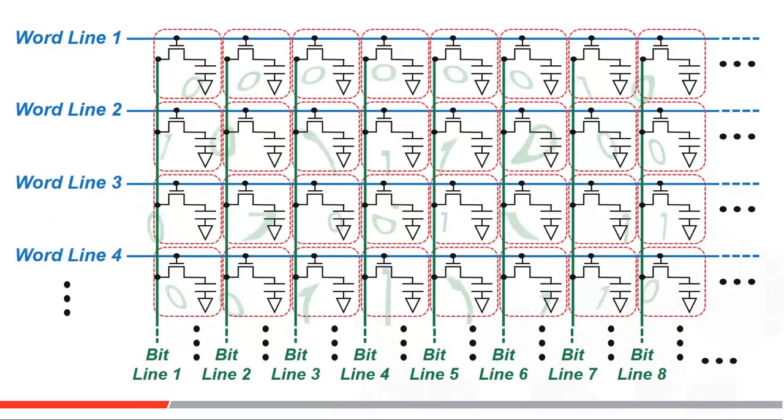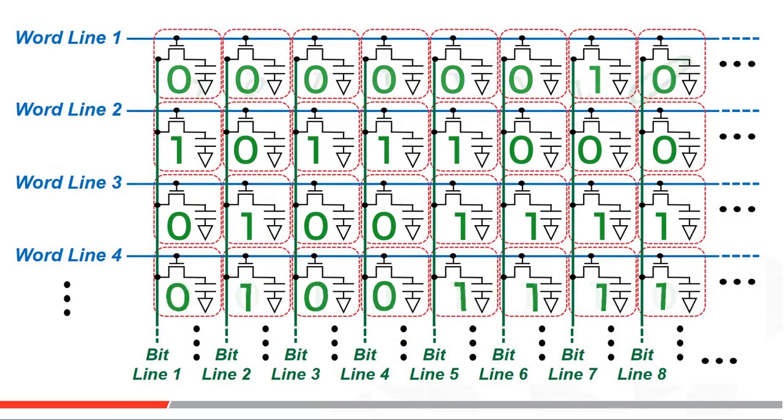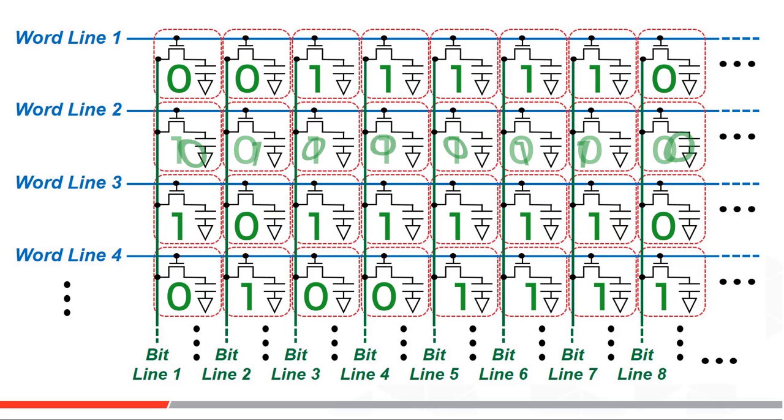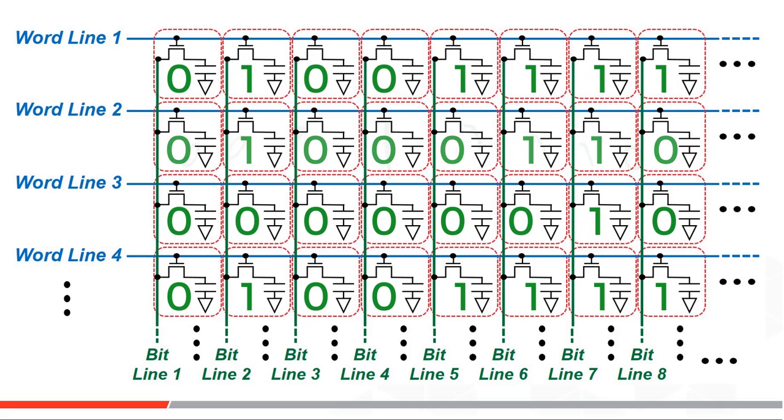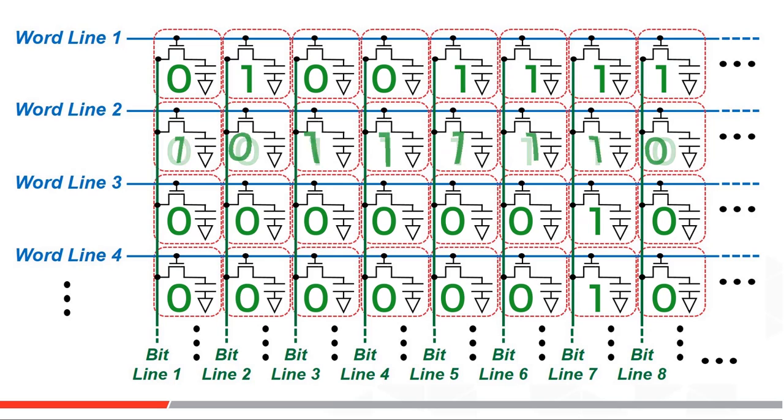In DRAMs, memory bits can be read over and over or written over and over infinitely without damage to the structure and without losing content. That is different than flash, which has a destructive write and erase operation.